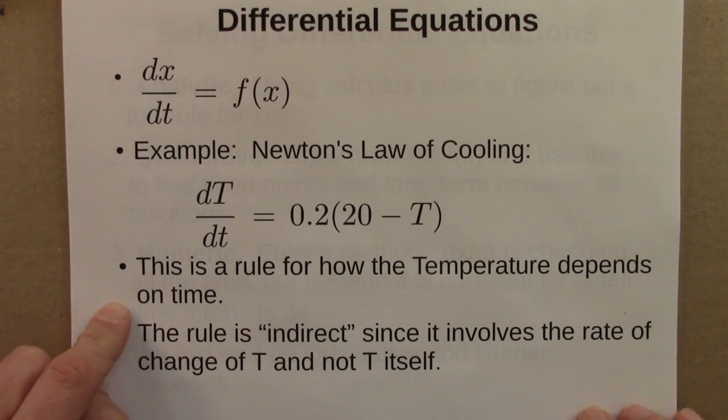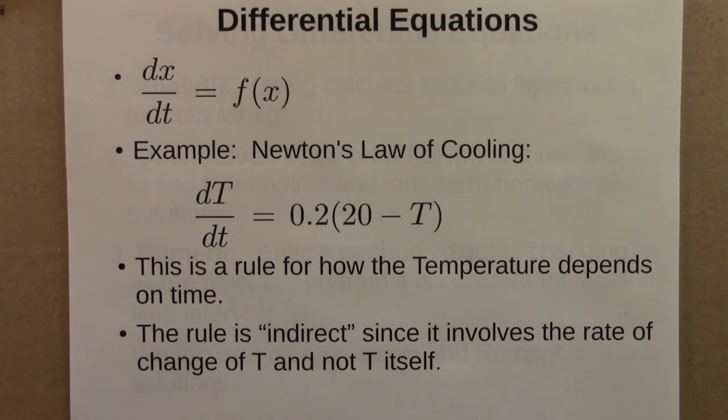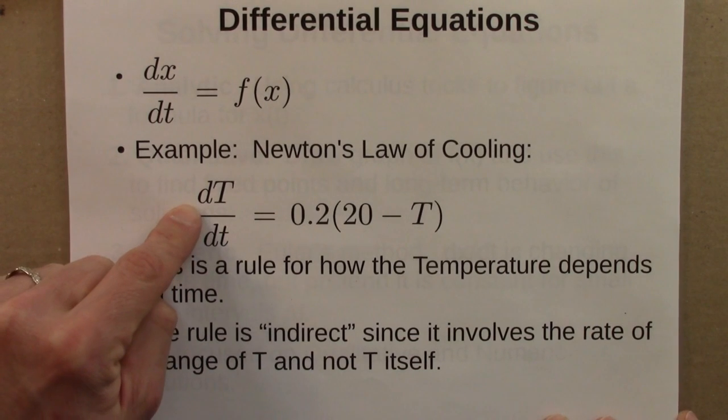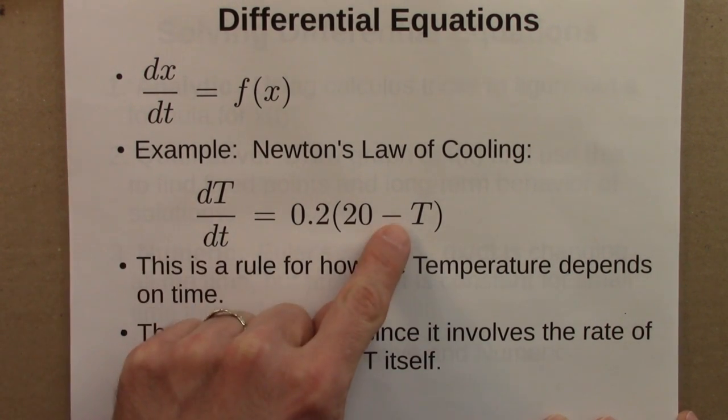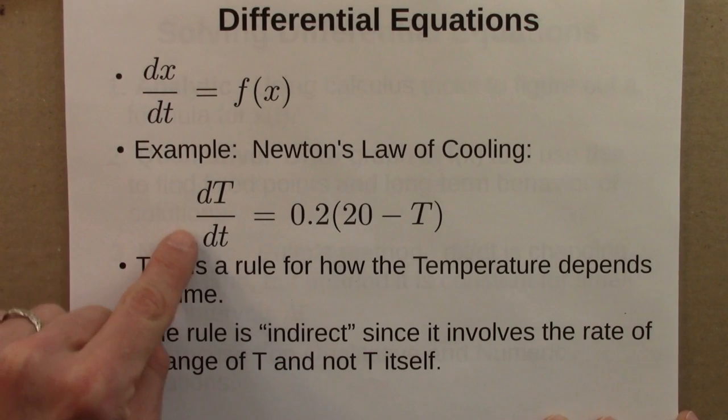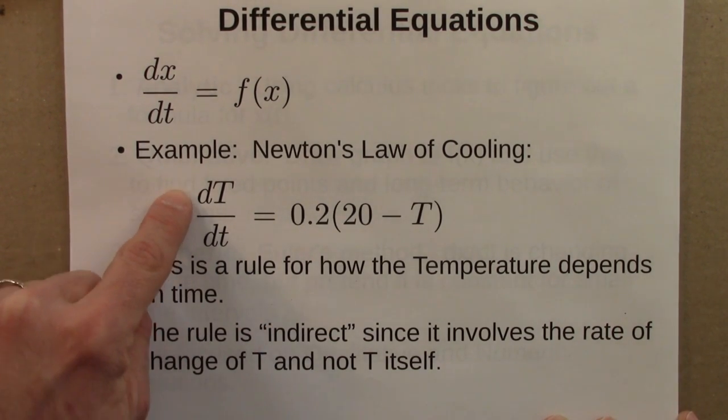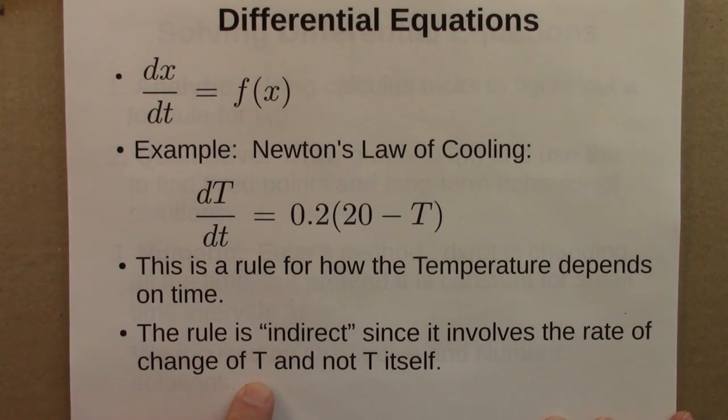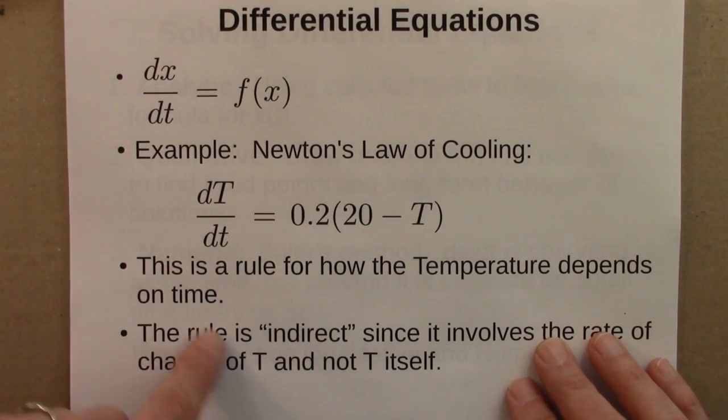Again, this is a rule for how the temperature depends on time. A dynamical system is just a rule for something that evolves forward in time. In this case, the only difference is that the rule is indirect. By that I mean, this doesn't tell you directly if you know the current value of temperature, what the next temperature value will be. Instead, it specifies how T changes by telling you what its rate of change is at any moment. It's indirect in that it involves the rate of change of T and not T itself. It's like wanting to know somebody's position but being told velocity. That's what makes this a little bit challenging mathematically.